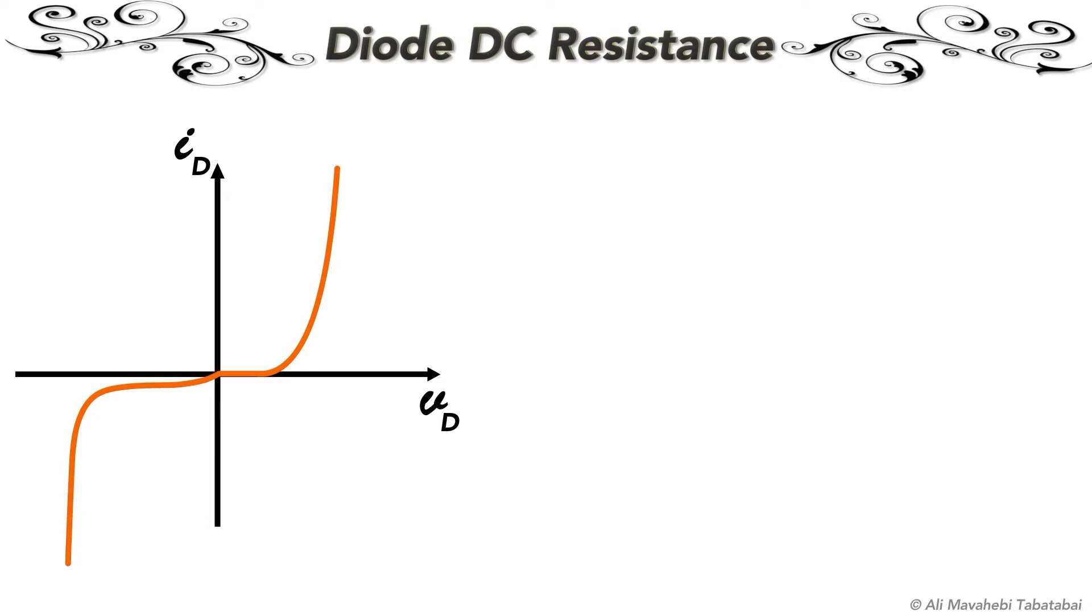Before going further, I would like to get you familiar with different types of notations you will see throughout the course. To distinguish between DC and AC components of an electrical quantity, I will use uppercase letters with uppercase subscript for DC quantities. For example, I subscript D and V subscript D are the DC current and voltage values of a diode.